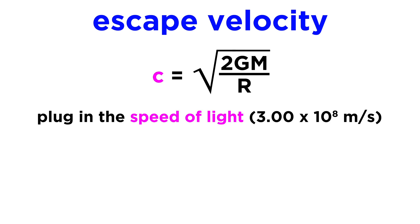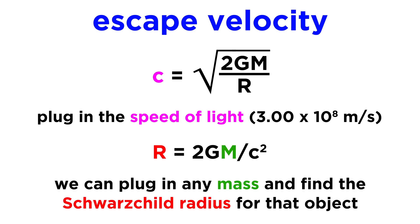Taking our previous equation and plugging in C for V, and then solving for R, we can plug in any mass we want into this equation and solve for the radius within which that object must be compressed.